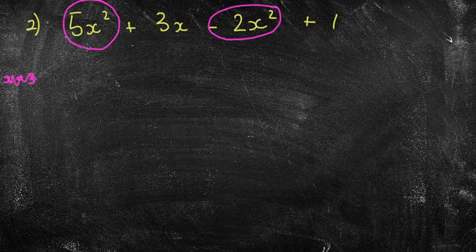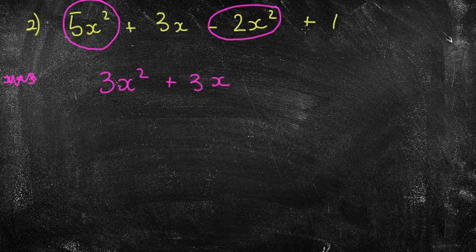So I'm going to add the 5 take away 2. That is 3x squared. I've got no other x's so plus 3x. I've got no other constant numbers. I've just got plus 1. And there you go. That's your answer.